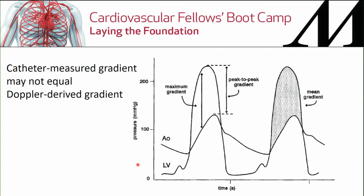The measurements made in the cath lab use high-fidelity catheters actually measuring pressure, whereas the gradient obtained in the echo lab is based on the peak instantaneous gradient. These events occur at different points in the cardiac cycle and are affected by different physical laws, so very frequently there is not complete agreement between these two measurements, which can lead to confusion in determining the degree of stenosis.